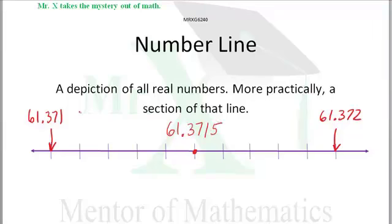61.3715. Again, if it's easier to see this with a zero written after these guys, 61.3715 is halfway between 61.3710 and 61.3720. Now what's the limit to this process?